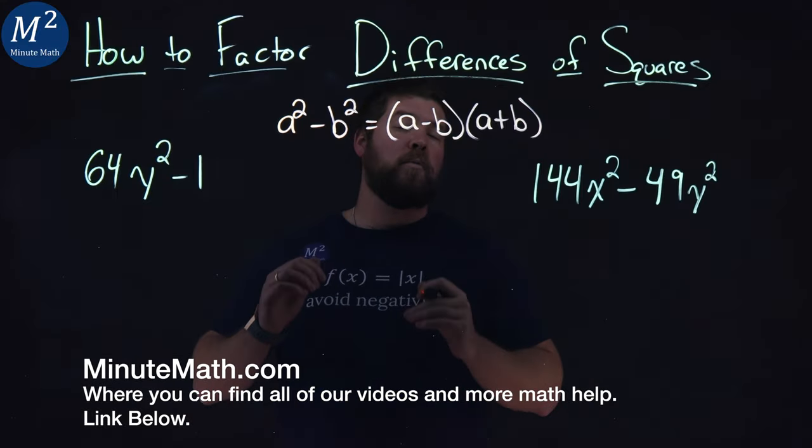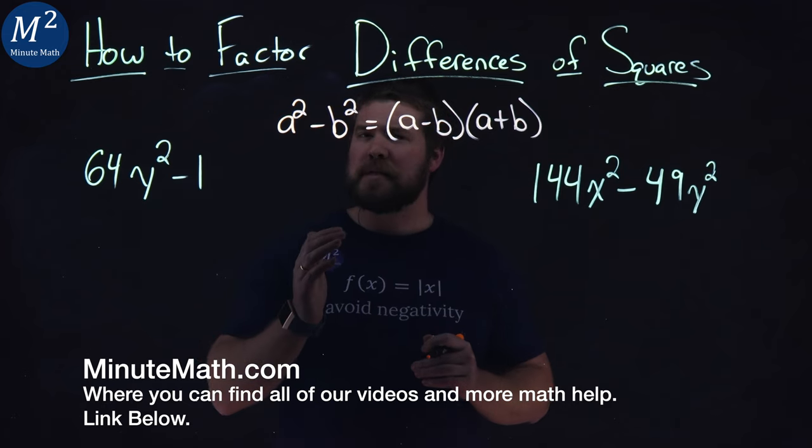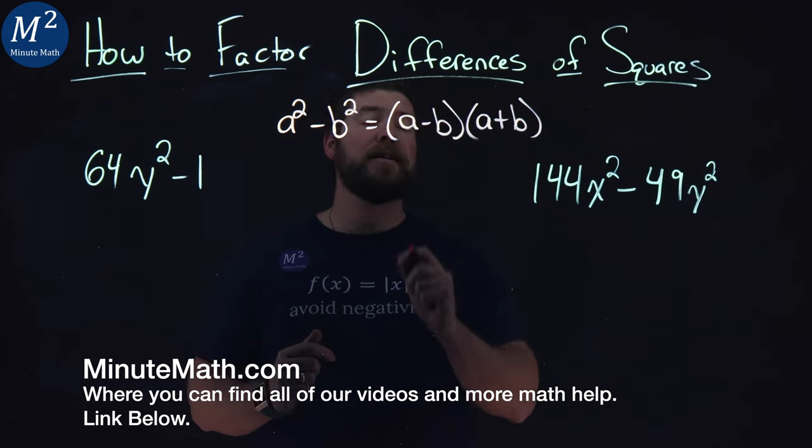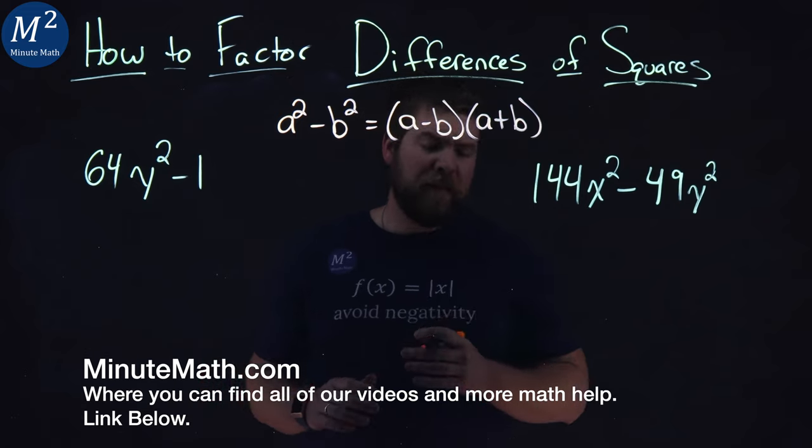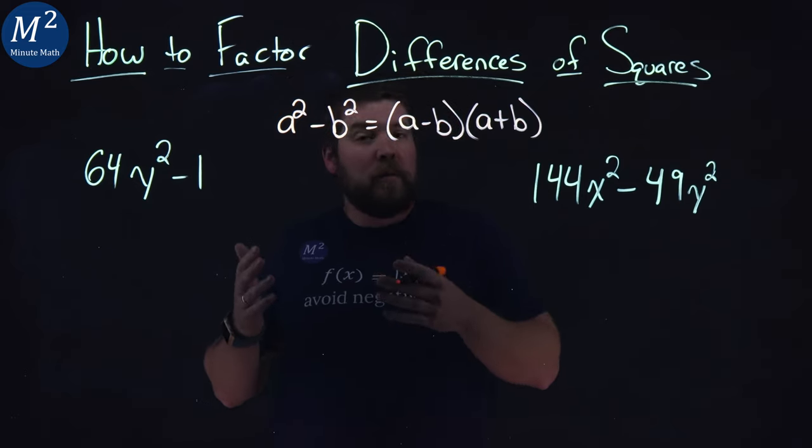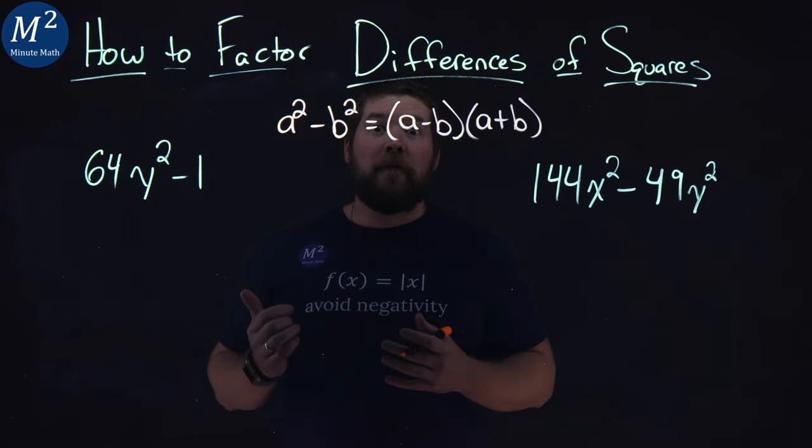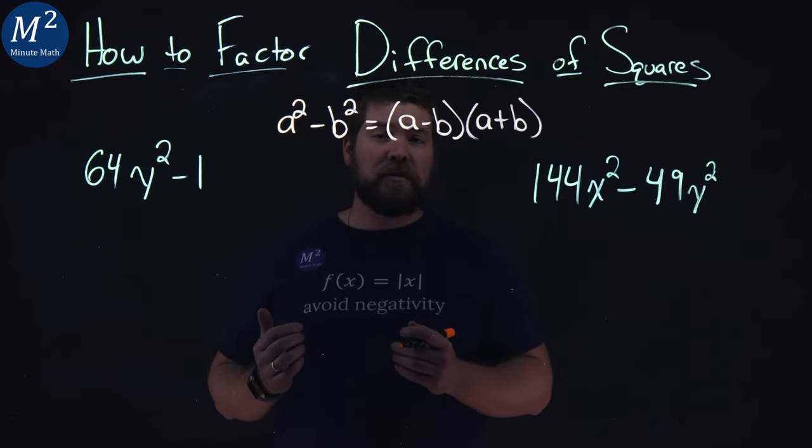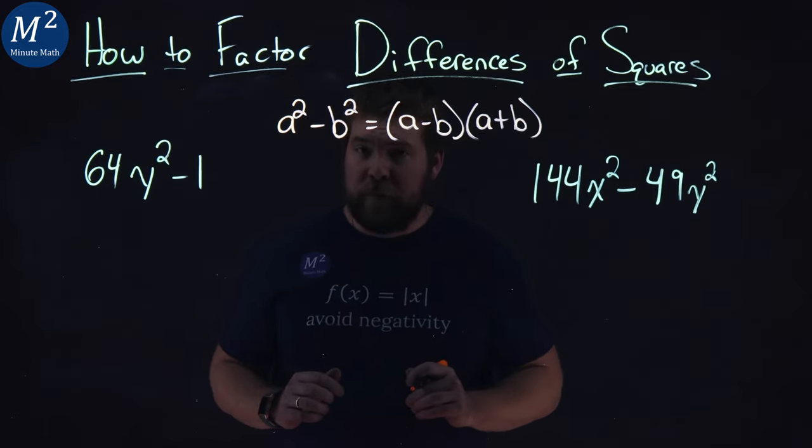We have this formula right here, a squared minus b squared can be factored to be a minus b times a plus b. And this is useful when we have some polynomials of special forms and we want to factor them. So we have two examples here to go through and we'll see how we can apply this formula.